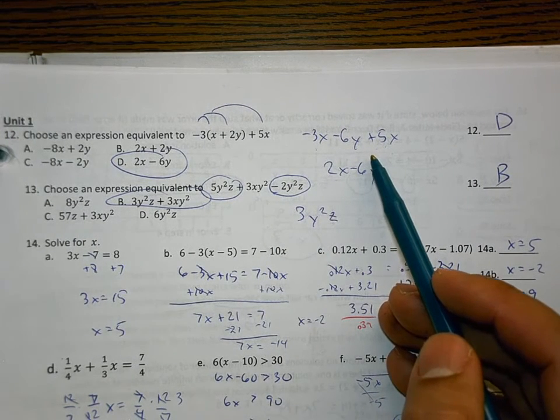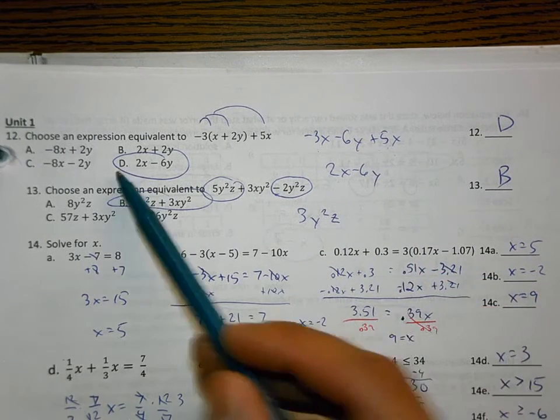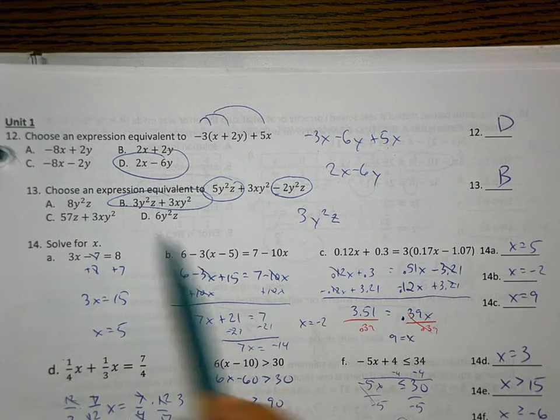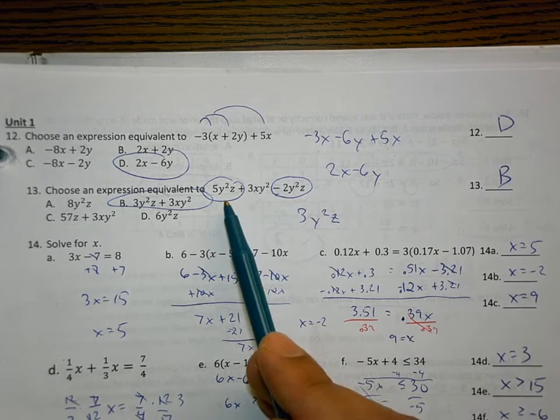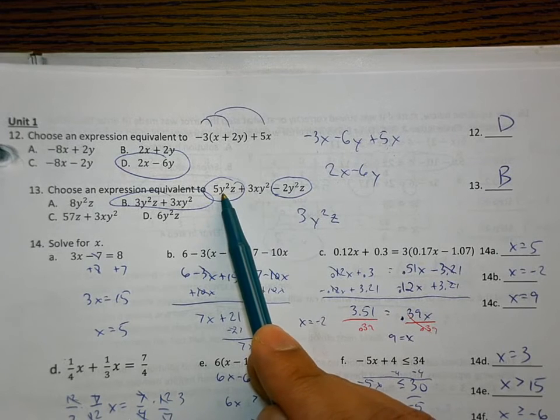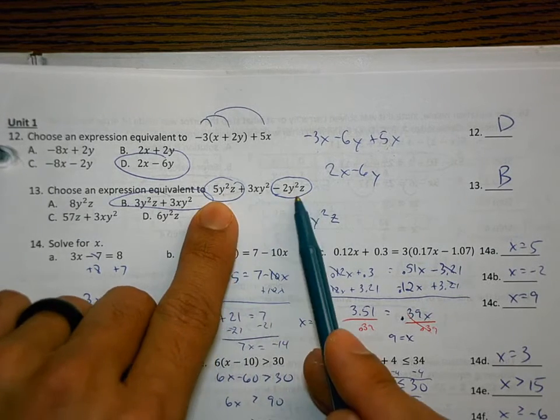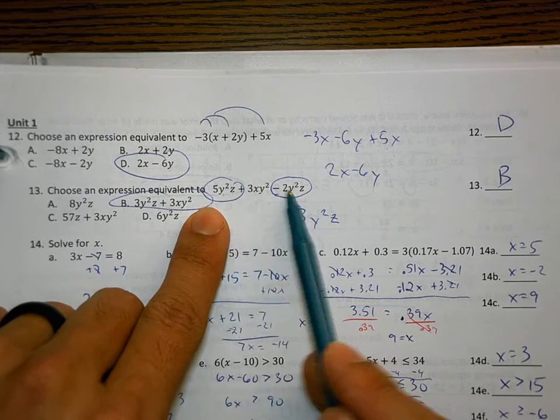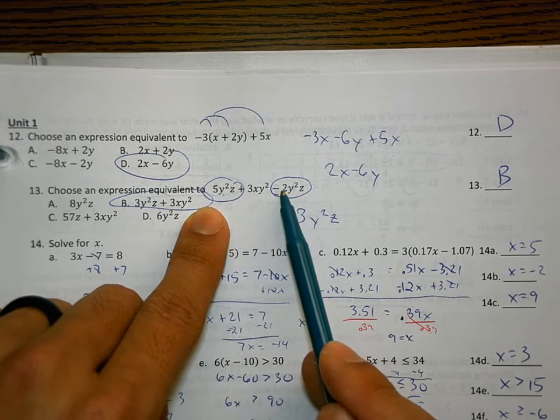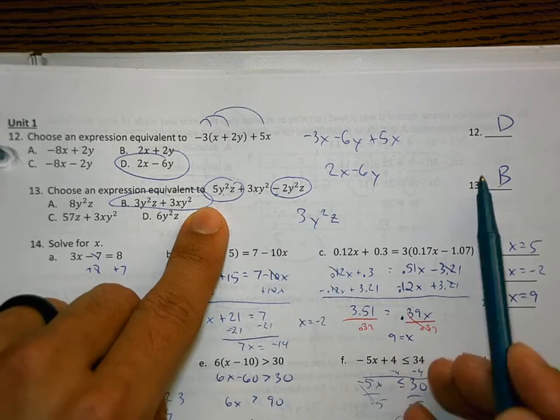We don't want to change the sign unless we're doing something to the opposite side. The correct answer for this is D. When you're looking at number 13, you don't change the sign between the 5y squared z minus the 2y squared z. You just put them together. You take these like terms. They have the same variables. And then 5 take away 2 is 3y squared z. The correct answer for that is B.